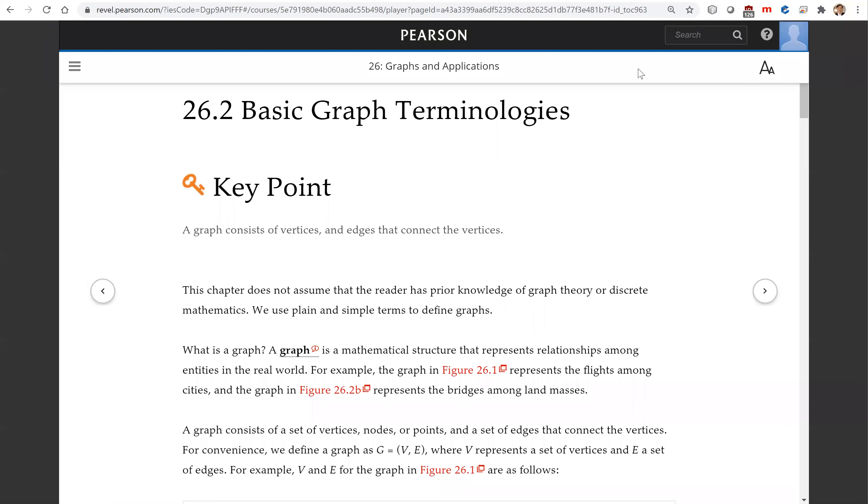Hello, in this video we will introduce basic graph terminologies. A graph is a very simple structure. It consists of a set of vertices and set of edges connecting vertices. This chapter does not assume that the reader has any prior knowledge of graph theory or discrete mathematics. We use plain and simple terms to define graphs.